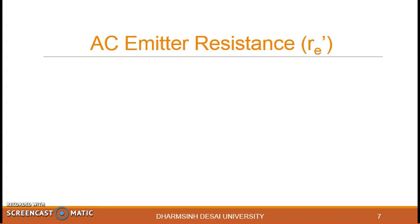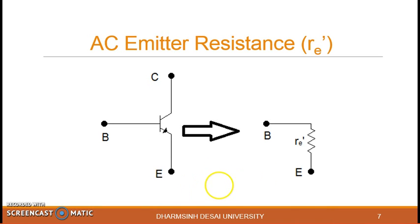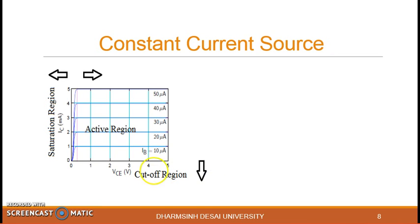So now it's clear that at the input side it's a resistance. Looking from the emitter side it's a resistance between base and emitter and the resistance value is RE dash. Now the remaining part is between the collector. So for the collector case let us see the output characteristics.